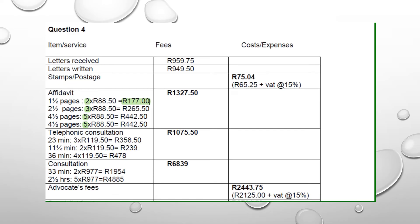The telephonic consultation was R190.50 per 10 minutes. Remember: 23 minutes = 3 sessions, 11 and a half minutes = 2 sessions, 36 minutes = 4 sessions — that's 9 sessions total. R190.50 multiplied by 9 gives R1,075.50.